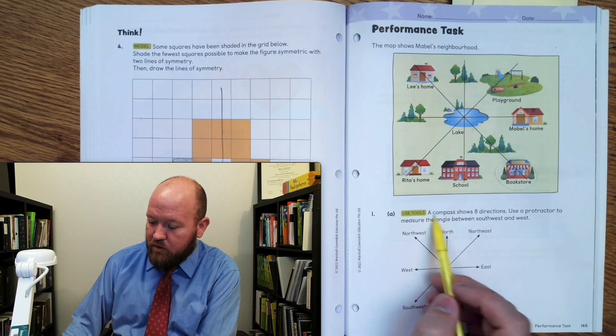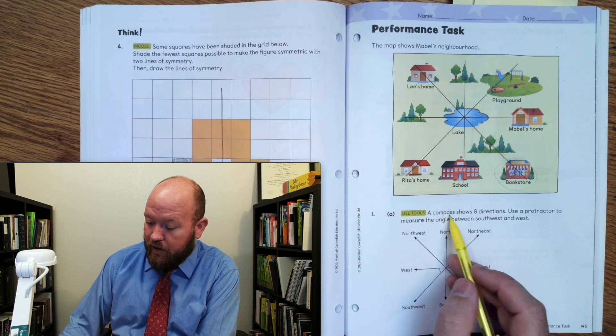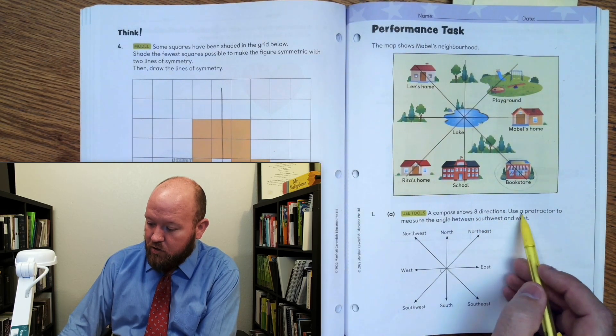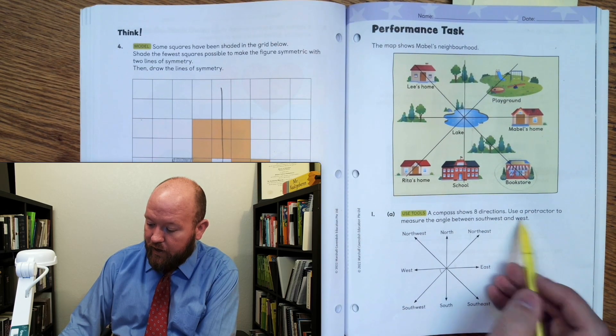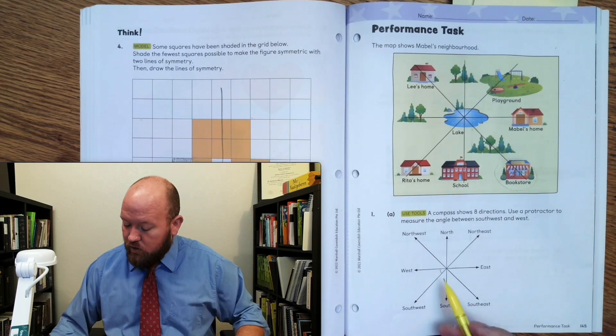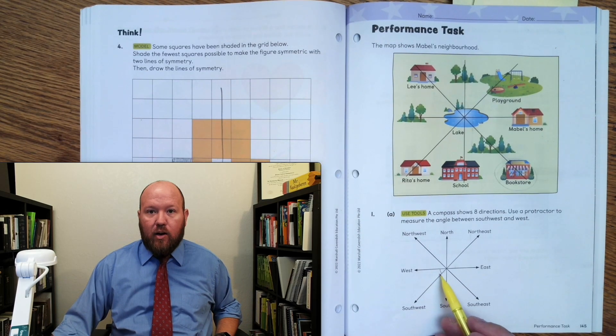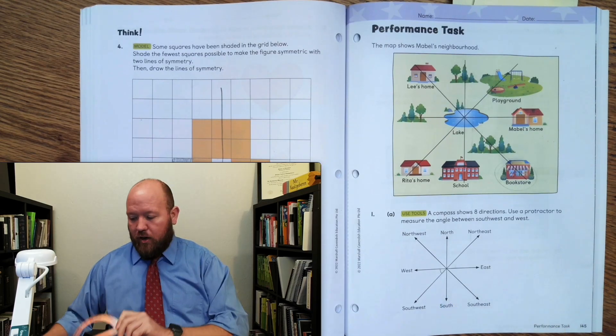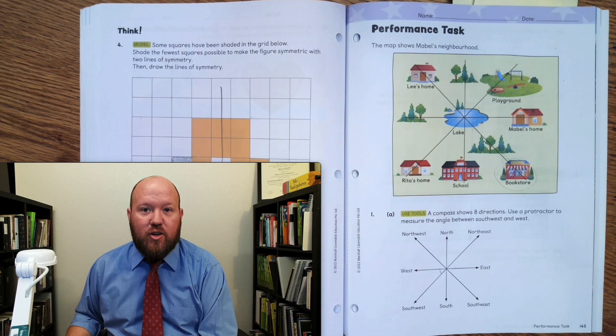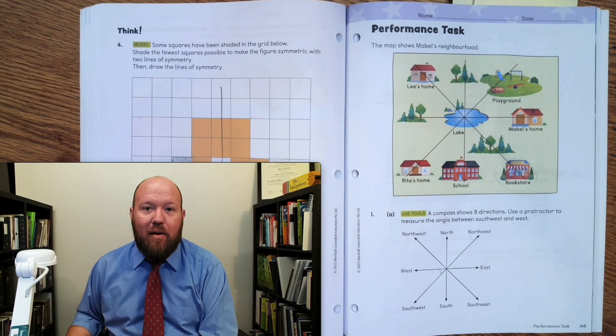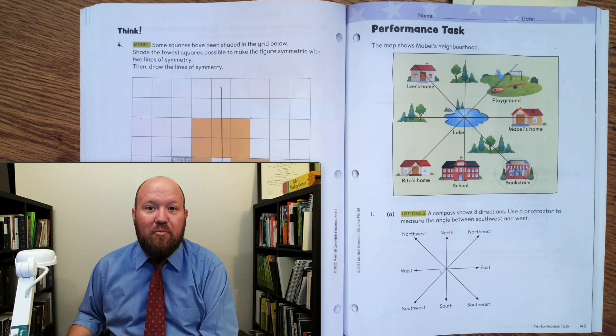Now here it says, use a compass. A compass shows eight directions. Use a protractor to measure the angle between southwest and west. So it wants us to find this measurement right here, and we're going to use our protractor to do that. So why don't you go ahead and pause the video, use your own protractor to see if you can figure it out, and then come back to see if you're looking at it right. Go ahead and pause the video now.